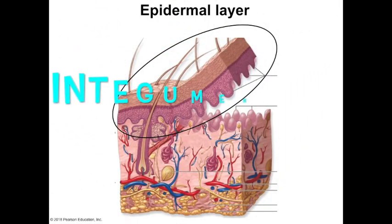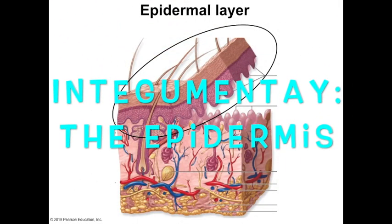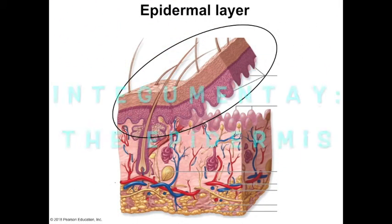First we're going to go over the most superficial layer, the epithelial layer, the epidermis. 'Epi' meaning above, 'dermal' meaning dermis. When you think of the epidermis, think of a wall of closely packed cells that are going to provide the primary protective elements of skin.